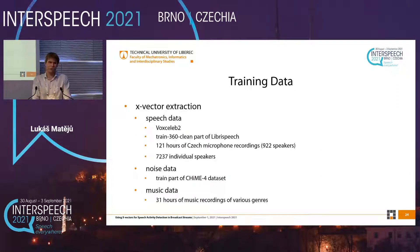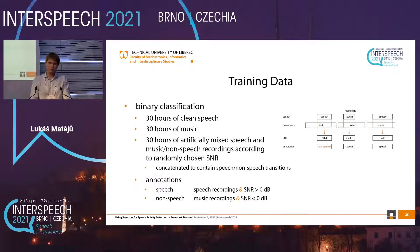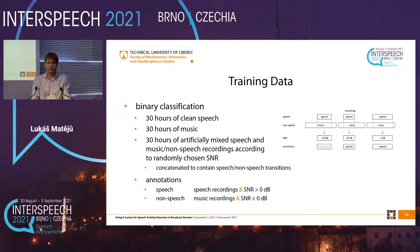For training the X-Vectors we used three different datasets. The speech data is a collection of VoxCeleb 2, part of LibriSpeech, and some internal Czech microphone recordings — over 7,200 speakers in total. We also used noise data from the CHiME-4 dataset and music data of different genres. For classification we used clean speech and clean music, four hours of each, and also mixed data with randomly chosen signal-to-noise ratios to provide more robustness and concatenated them to contain transitions. The annotation threshold was set at zero decibels — everything over zero decibels in speech was labeled as speech, the rest as non-speech.